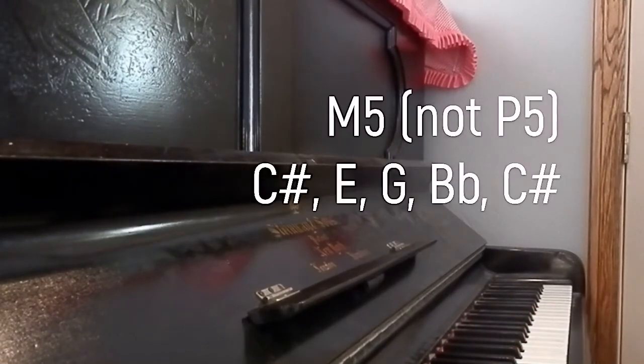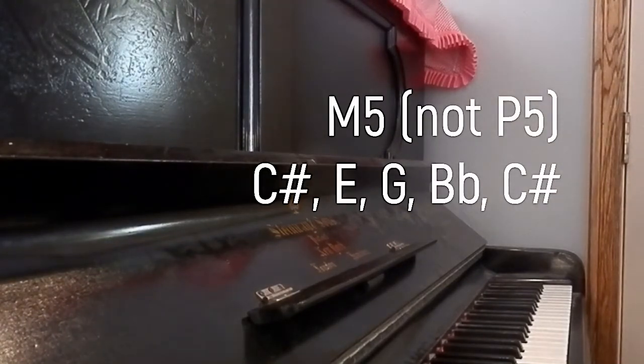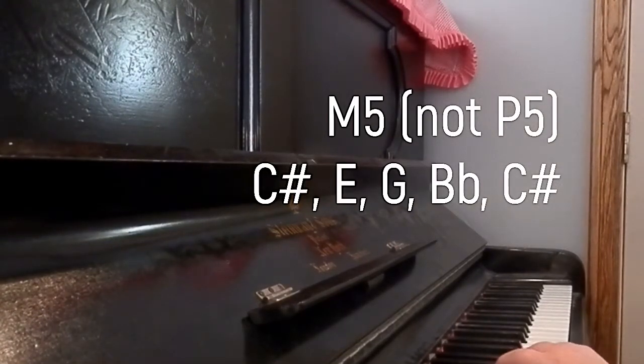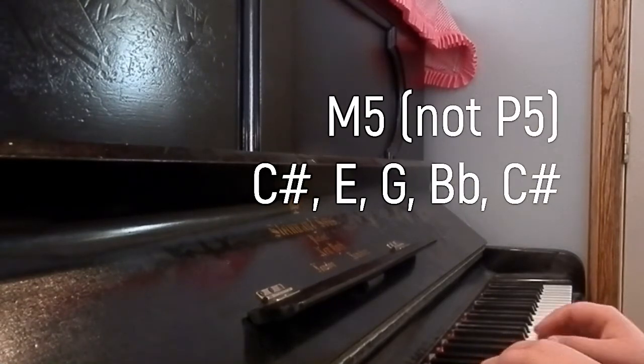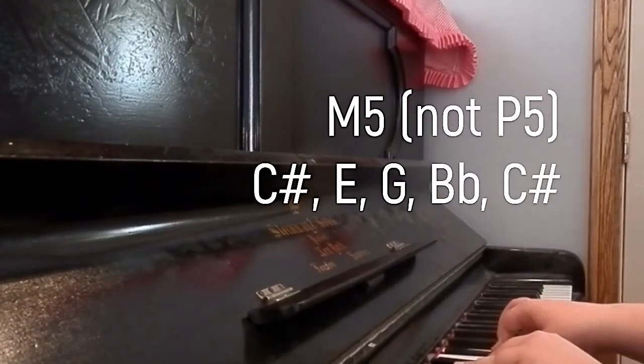So that's one inversion of the K5LA. Now this is an old cast P5. C-sharp, E, G, A-sharp and C-sharp.